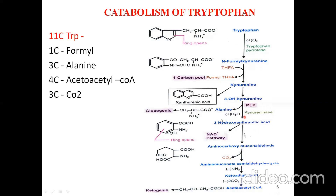The next step is the conversion of 3-hydroxyanthranilic acid to aminocarboxymuconic semialdehyde. At this point the pathway diverges; niacin synthesis is a minor pathway representing only about 3% of tryptophan metabolism. The 97% major pathway continues: decarboxylation forms aminomuconate semialdehyde, the amino group is removed to form ketoadipic acid, and two carbons are removed as CO₂ to form acetoacetyl-CoA.